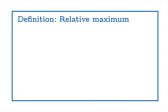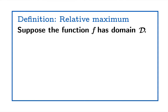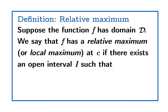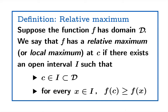This inspires the formal definition of relative maximum. Suppose the function f has domain D. We say f has a relative maximum — or equivalently, a local maximum — at the argument c, if there exists an open interval I such that c sits inside that open interval, which in turn sits inside the domain, and for every x in that open interval, f(c) is greater than or equal to f(x).